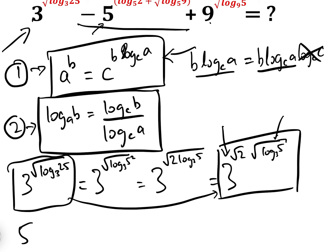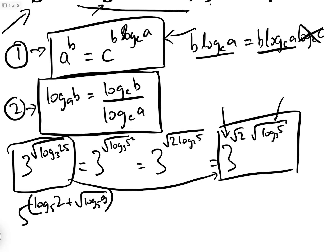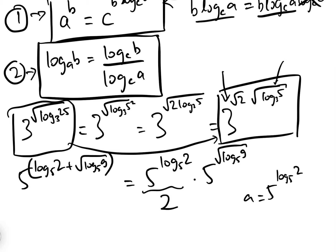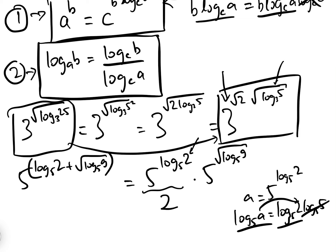Now for the second term: 5 to the power of (log_5(2) + √(log_5(9))). We can split that as 5^(log_5(2)) times 5^(√(log_5(9))). Now 5^(log_5(2)) actually equals 2. The proof: let a = 5^(log_5(2)), take logs base 5, and you get log_5(a) = log_5(2)·log_5(5) = log_5(2), so a = 2. In general, any number A to the power of log_A(B) equals B.